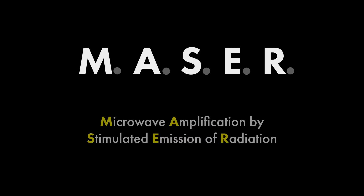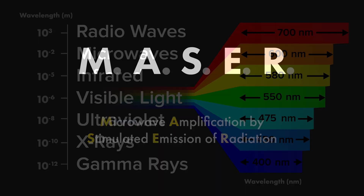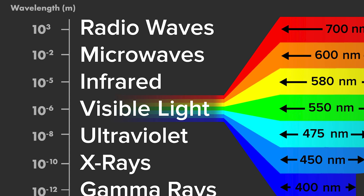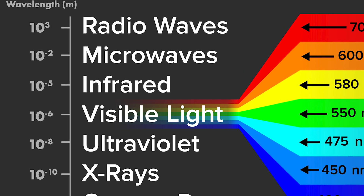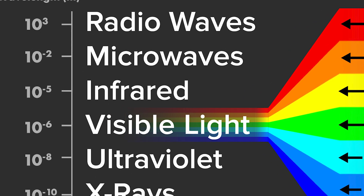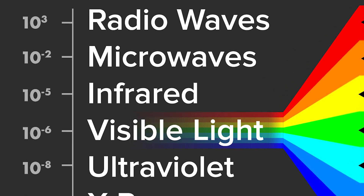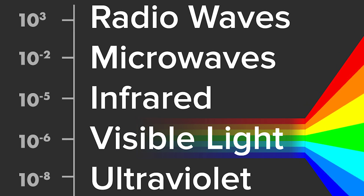The word maser stands for Microwave Amplification by Stimulated Emission of Radiation. This means that the light the maser produces is in the microwave region of the electromagnetic spectrum, which is lower frequency than visible light. Although you can't see microwaves, these and visible light are both forms of electromagnetic radiation.